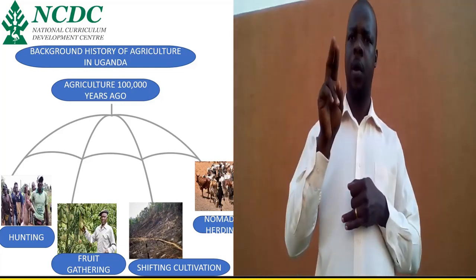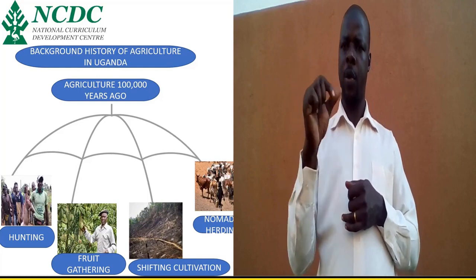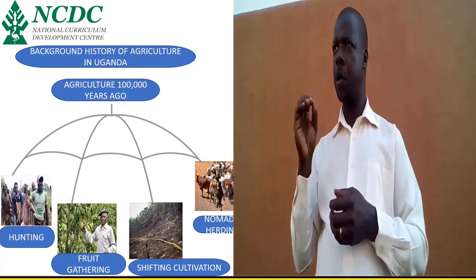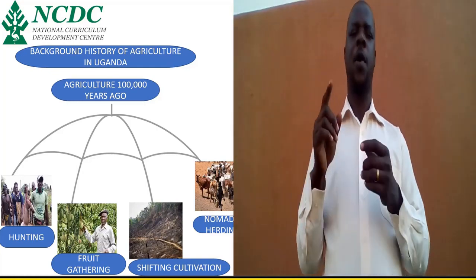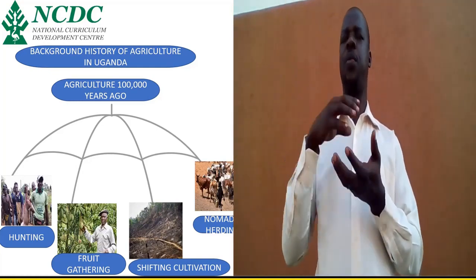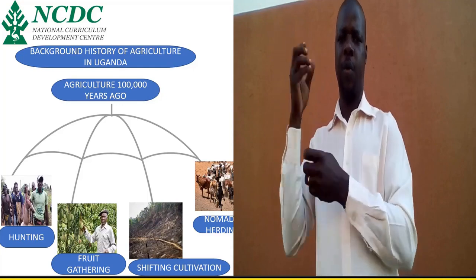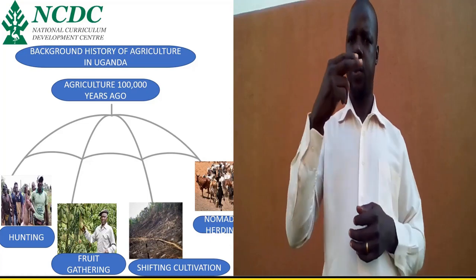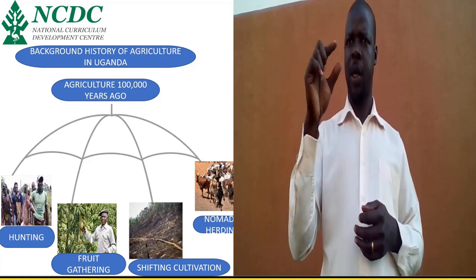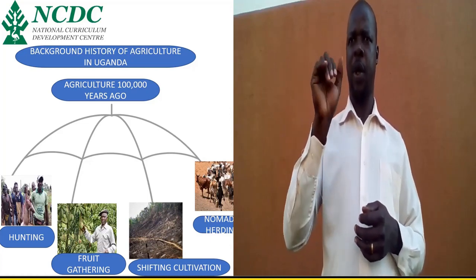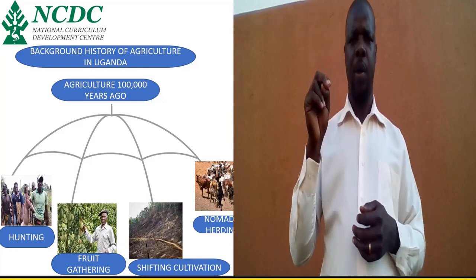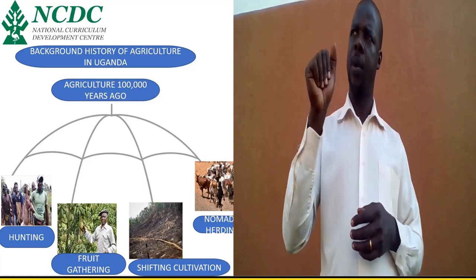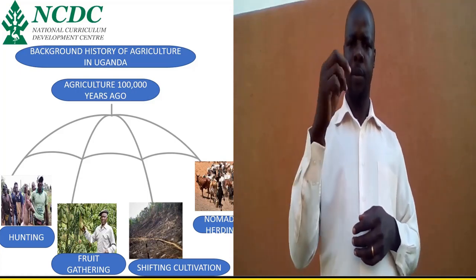The second word is fruit gathering. It means looking for fruits there in the bush, the forest. And the third word is shifting cultivation. And the fourth word is nomadic herding.